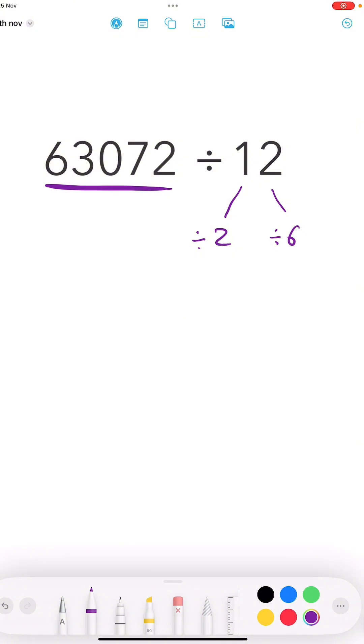So I'm going to start off by halving it because that's fairly easy. So we do 63,072 halved and that's going to give us 31,536. Half of 70 is 35 and 36 with the 2.